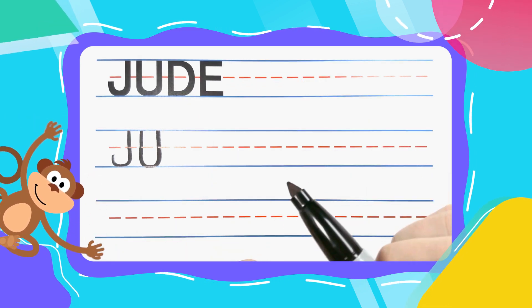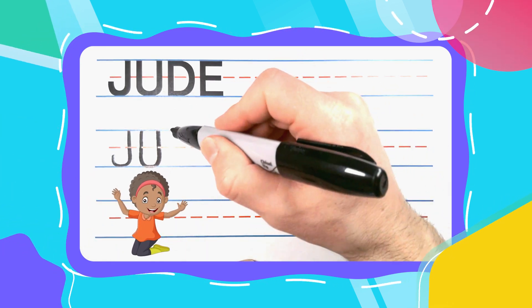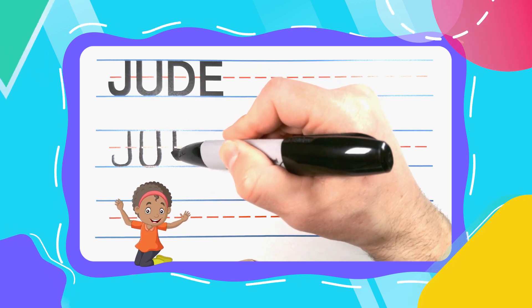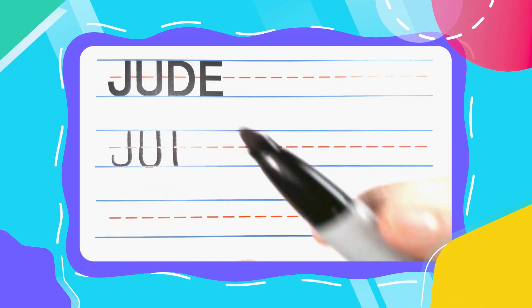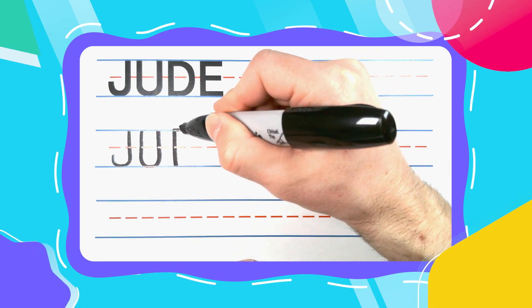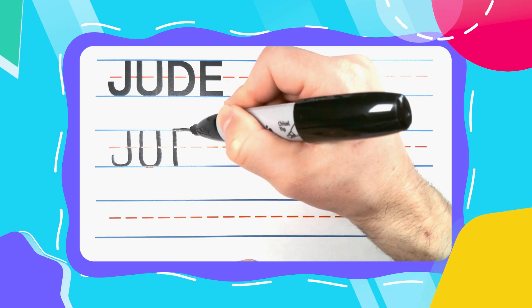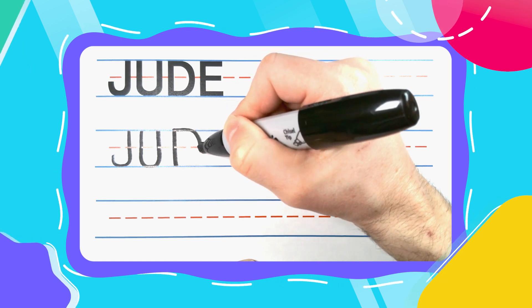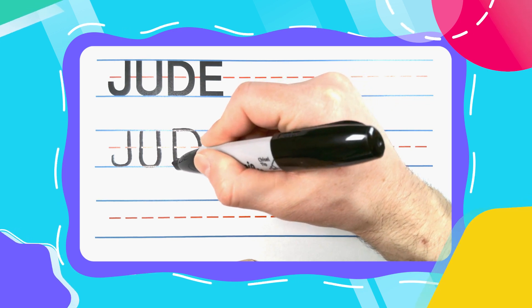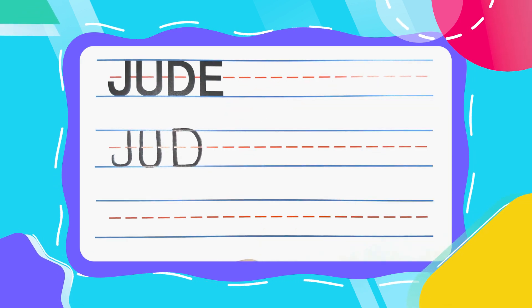The next letter in Jude is the D. Dance in D. And Dance in D's start with a straight line down. Pick your pen up. Come all the way back to the top. And bounce out to the right. Curve, curve, until you get to the bottom. And then come straight back to the left to complete your Dance in D.